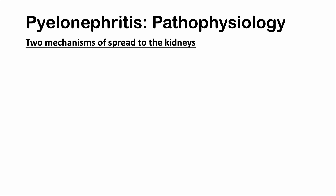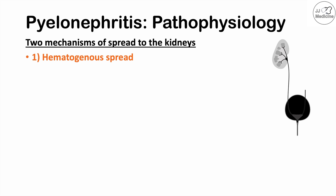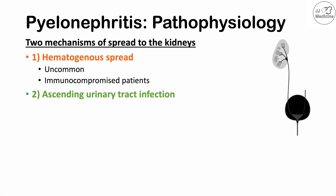Let's talk about the pathophysiology of pyelonephritis. There are actually two mechanisms of spread to the kidneys. The first is hematogenous spread, meaning it spreads from the blood. This is an uncommon route, more likely to occur in immunocompromised patients, usually from another infection at a different site that enters the blood and travels to the kidney through the bloodstream. The second mechanism is an ascending urinary tract infection.